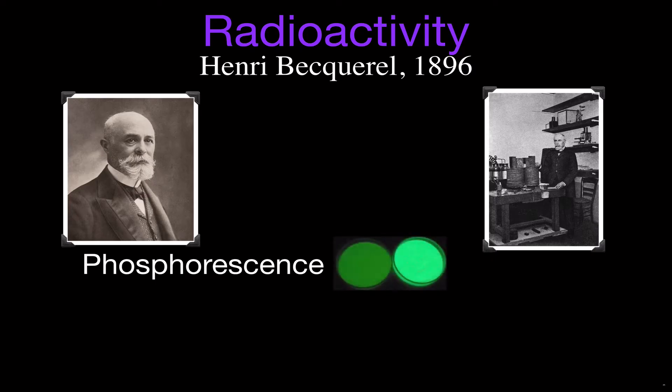That glow-in-the-dark thing you see, you expose something to light, you turn the light off, it glows in the dark. That's called phosphorescence. And they were trying to figure out what phosphorescence is, what x-rays were, what's all this energy that's being emitted.